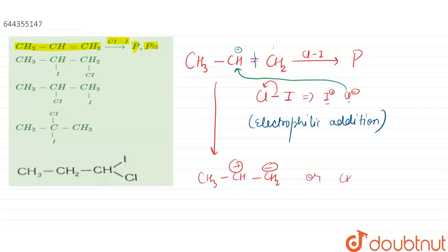We know that this carbocation is stabilized by the CH3 group, that is electron donating group. Here, it is not stabilized, so this carbocation will be formed.